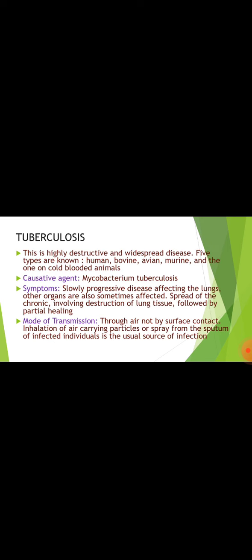Tuberculosis: this is a highly destructive and widespread disease. Five types are known — human, bovine, avian, murine, and the one affecting cold-blooded animals. Causative agent: Mycobacterium tuberculosis. Symptoms include slowly progressive disease affecting the lungs; other organs are sometimes affected as well. It involves spread of chronic destruction of lung tissue followed by partial healing. Mode of transmission: through air, not by surface contact. Inhalation of air-carrying particles or spray from the sputum of infected individuals is the usual source of infection.